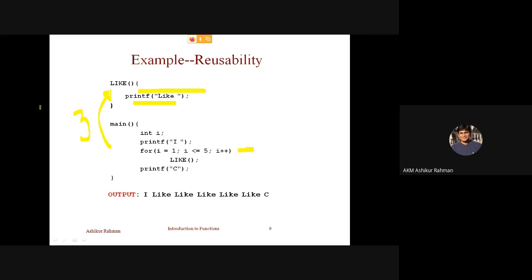One thing is: you give a task to do, and it does the task. And after doing the task, it tells you: okay, this is the result. The task I was given, I have done it. So we need both-way communication. Main is the caller and like is the calli. A function calls another function. We call main the caller function; the one being called we call the calli function.